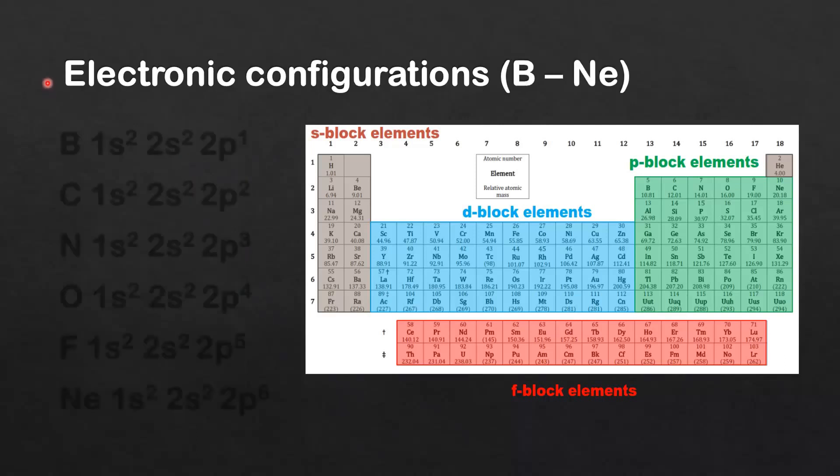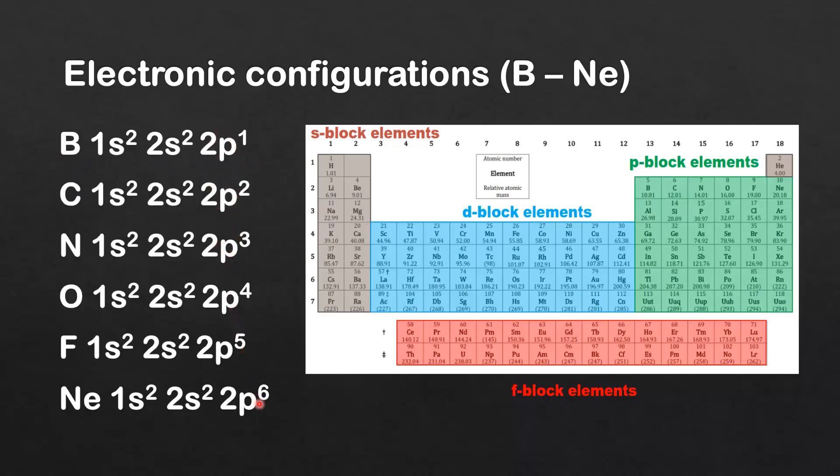Next are the electronic configurations of boron to neon. These are p-block elements and you can see that the valence electrons are all filling the p sublevel.